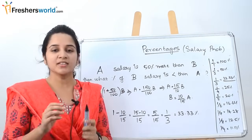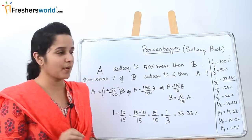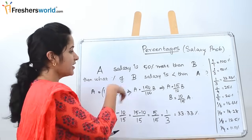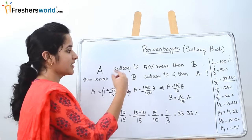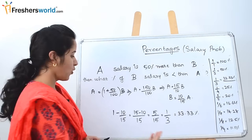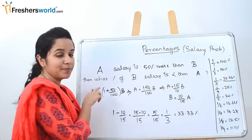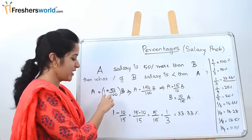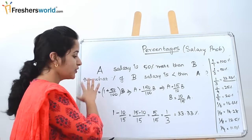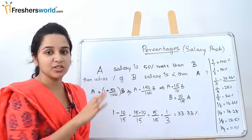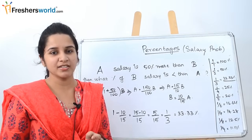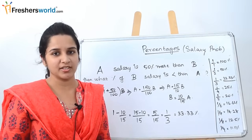In this concept we are talking about salary problems. Similarly, if a salary is 50% less than B's, you would use a subtraction sign instead of addition and follow the same method. This is a common type of problem you will face in an aptitude exam.